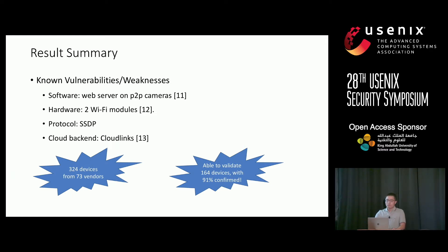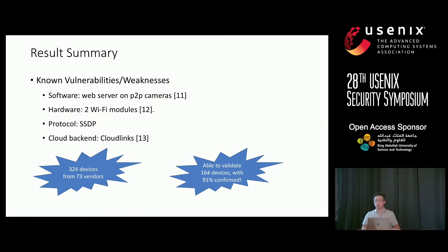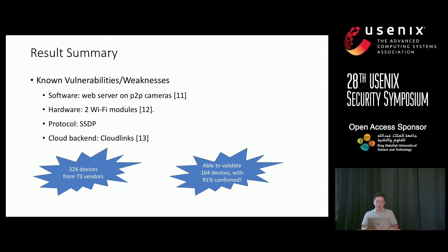To validate our approach, we start from known vulnerabilities spanning different dimensions: a vulnerable software affecting P2P cameras, hardware modules that may leak Wi-Fi credentials, a protocol that may be used in reflection-based DDoS attacks, and weak cloud backends that attackers may exploit. After analyzing these vulnerabilities on our platform, we found over 300 potentially vulnerable devices, and among those we could validate, 91% were confirmed to have the vulnerability or weakness.